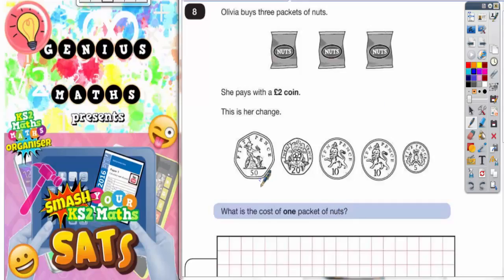So we've got 50 plus 20 which is 70 pence, plus 10 which is 80, plus another 10 which is 90, plus 5 which is 95. So she's got 95 pence change.